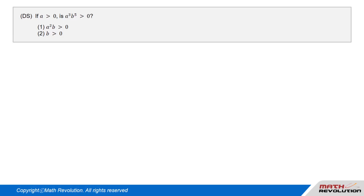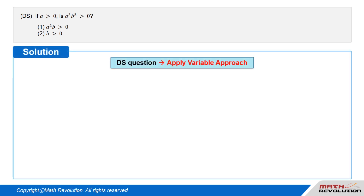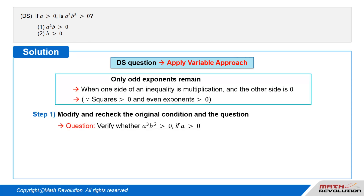DS question: if a is greater than zero, is a cubed times b to the power of 5 greater than zero? Condition one: a squared times b is greater than zero. Condition two: b is greater than zero. Let us solve this DS question using the variable approach. Follow the first step of the variable approach by modifying and rechecking the original condition and the question. We are required to verify whether a cubed times b to the power of 5 is greater than zero, given that a is greater than zero.